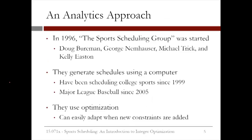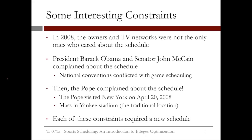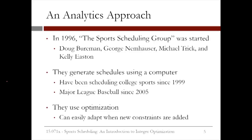Recognizing how difficult it was to construct sports schedules by hand, in 1996 a company called the Sports Scheduling Group was started. The founders were Doug Bierman, a former baseball vice president, and three academics: George Nemhauser, Michael Trick, and Kelly Easton. Instead of generating sports schedules by hand, they use a computer. They've been scheduling college sports since 1999 and Major League Baseball since 2005. They rely on optimization to build the schedules, which can easily adapt when new constraints are added.